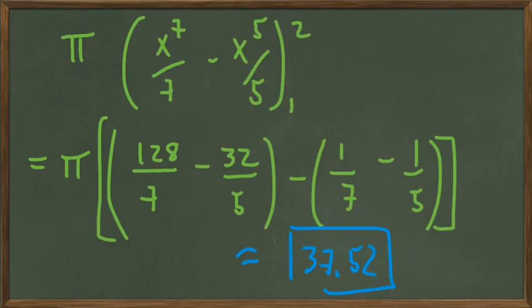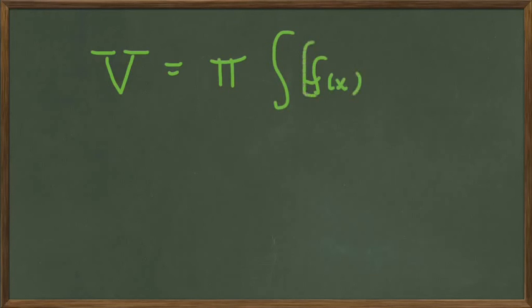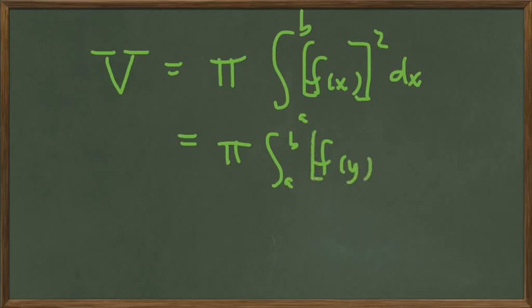That justifies 37.52 as a good eyeball number. Let's summarize our two formulas. When we're just revolving a curve about the x-axis, the formula is pi f of x, which is represented by the radius, squared dx. Note that if we revolved about the y-axis, it would be a to b f of y squared dy. So we have to find the function of y. And if we want the region, this is when we have a solid region.